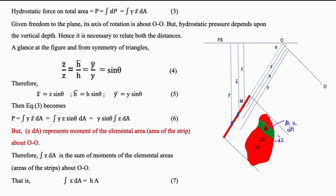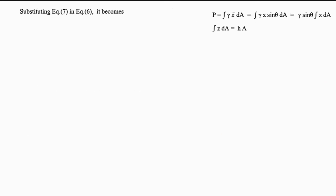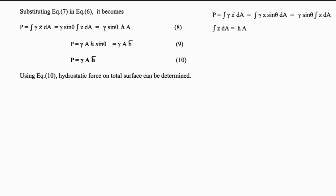Integral Z dA equals H into A, where H is the inclined distance of the center of gravity of the area and A is the total surface area. Substituting, P equals gamma sin theta into HA, or P equals gamma A H sin theta, giving P equals gamma A H-bar. Using this equation we can calculate the magnitude of the total hydrostatic force on the inclined surface.